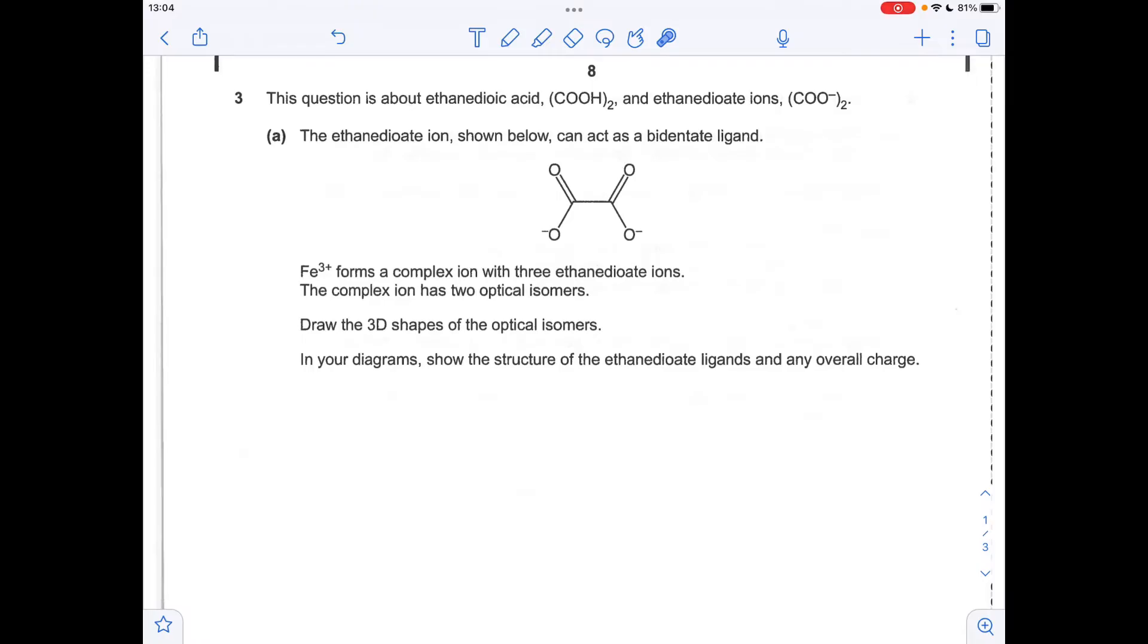For the first part, we've just got to draw these complex ions in 3D. So octahedral complexes, we're starting with an empty octahedron. So we have the central ion, straight up, straight down, two back, and then the two sticking out. And then all we need to do is apply three of these.